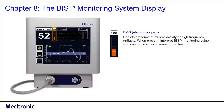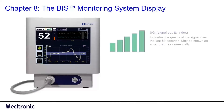The electromyogram reading depicts the presence of muscle activity or high-frequency artifacts. When this is present, assess the source of the artifact and interpret the BIS monitoring value with caution.